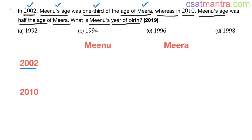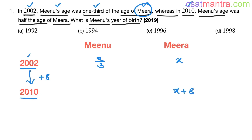I am assuming Meera's age as X in 2002. So Mino's age will be one third of the age of Meera, that is X by 3. Now, from 2002 to 2010 is 8 years. So 8 years are added — Meera's age will be X plus 8, and Mino's age will be X by 3 plus 8.